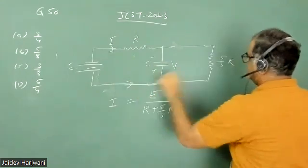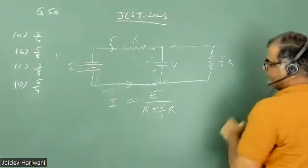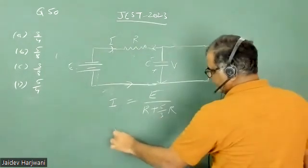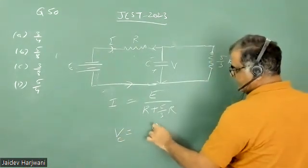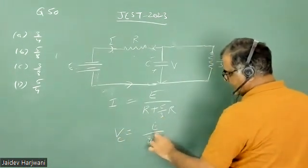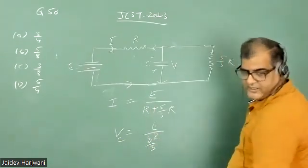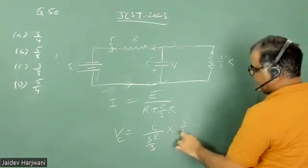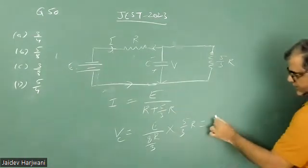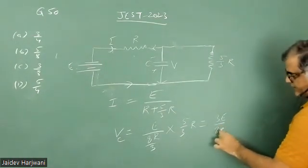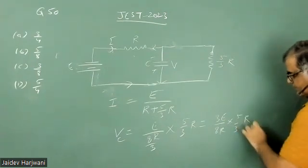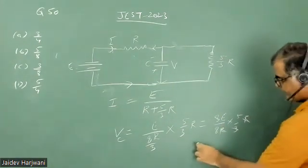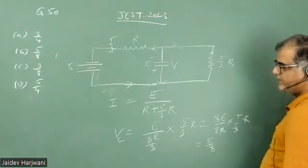Voltage across this capacitor — this voltage will be current into resistance. So if I want to find the voltage V across the capacitor, that will be E upon 8R/3 — that is 3R plus 5R equals 8R upon 3 — multiplied by this resistance 5R/3. So this gives me 3E/8R into 5R/3. The threes cancel and the R cancels, giving me 5E/8. So voltage is 5E/8.